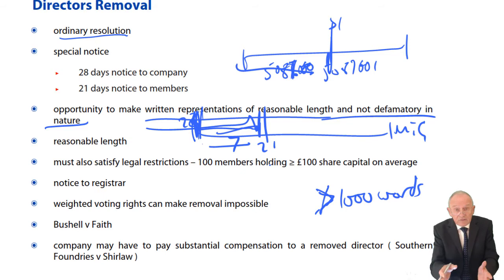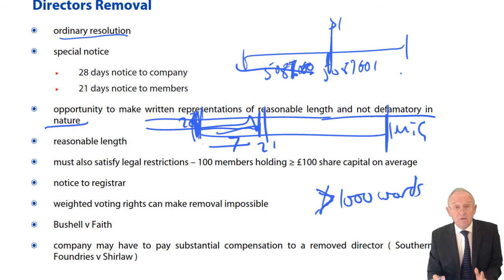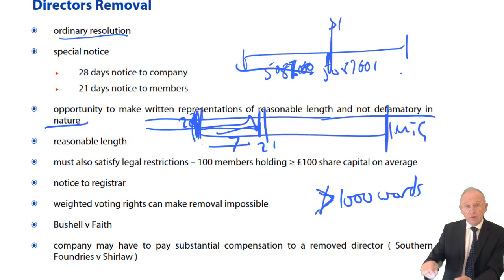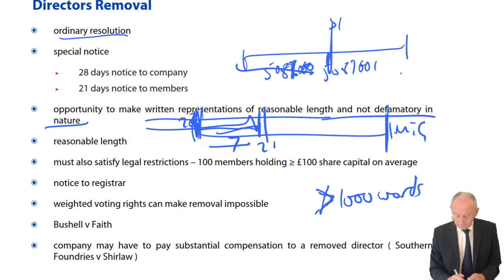If Simon submits his written representations too late — after the seven days have passed and notice has already been sent — notwithstanding that, at the meeting Simon is allowed to attend with his written representations and is statutorily entitled to read them out. The other directors cannot turn up the music so you can't hear his voice. He is entitled to attend, to speak, and to be heard with his written representations of reasonable length and not defamatory in nature.